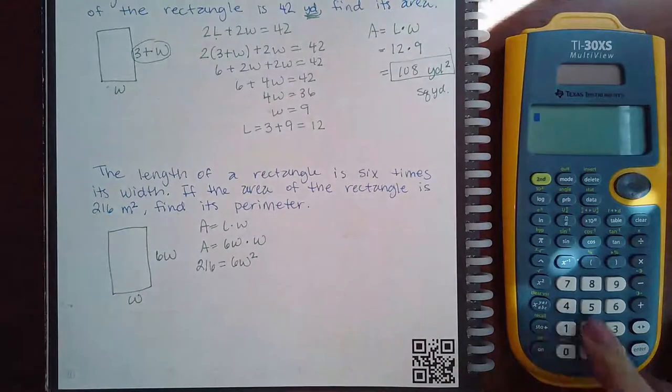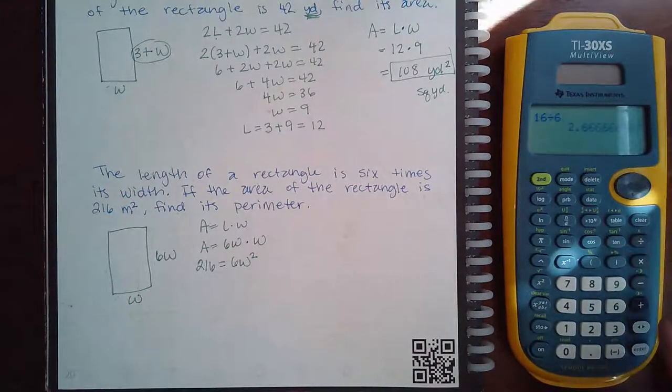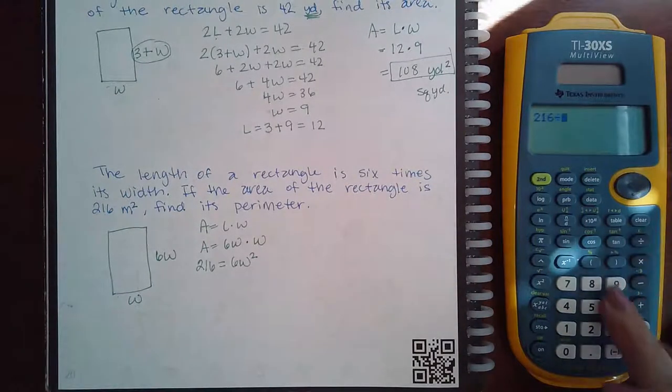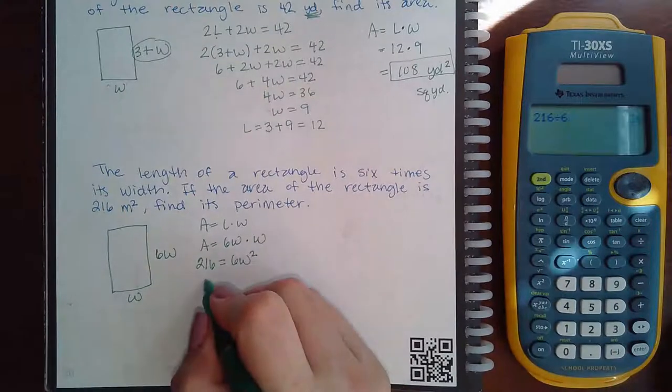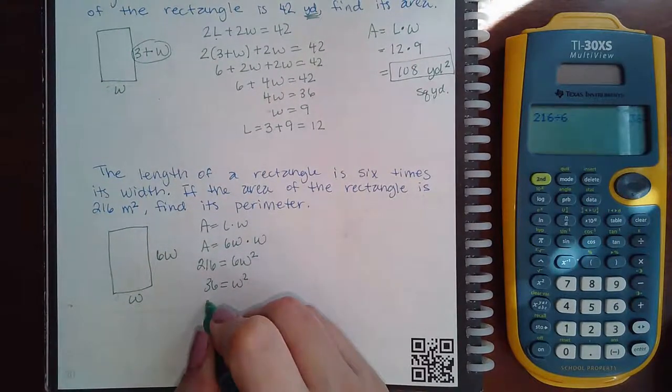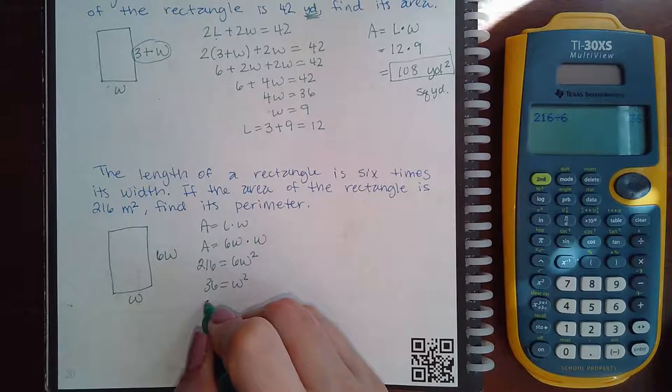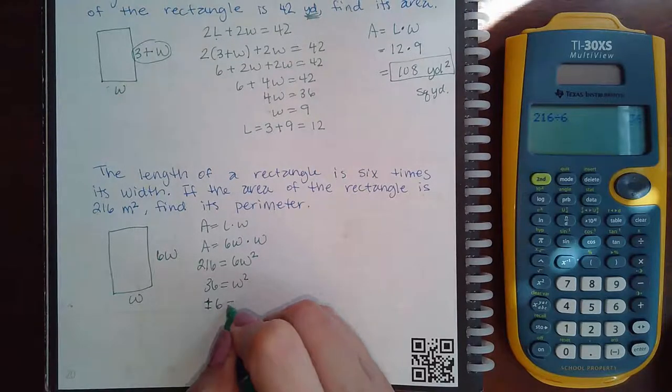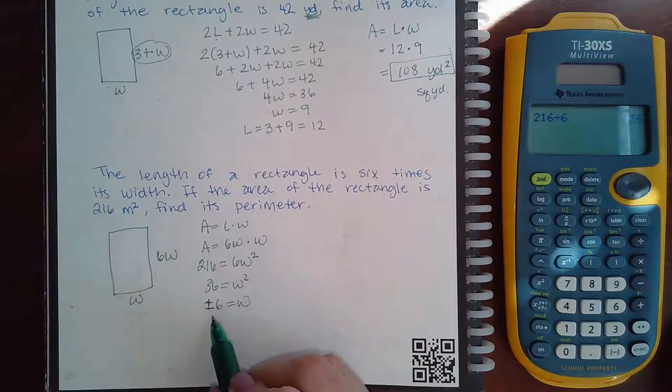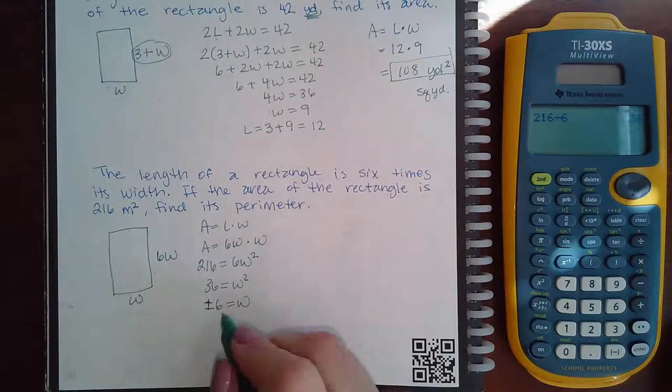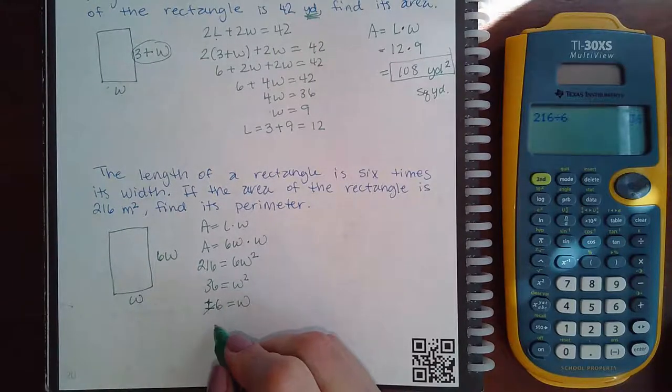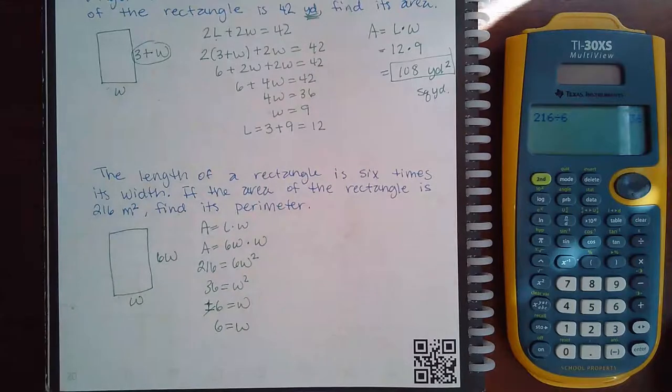So if I divide by 6, I get 36 equals W squared, and then I get that W equals plus or minus 6. But you have to be careful, the width cannot be a negative, so the negative option is not okay. W has to equal positive 6.